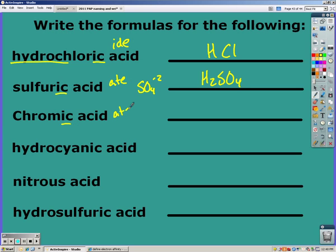Chromic acid came from chromate, which has a negative two charge. So we need two hydrogens in front. Hydrocyanic acid came from cyanide, which has a negative one charge, so HCN.